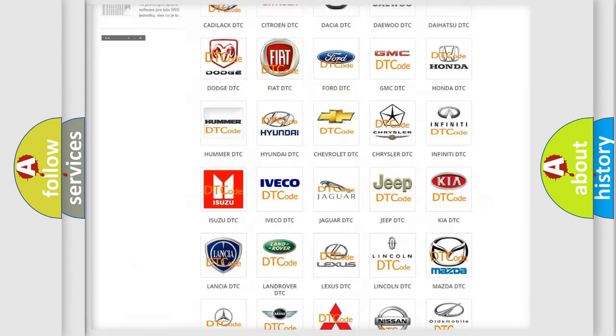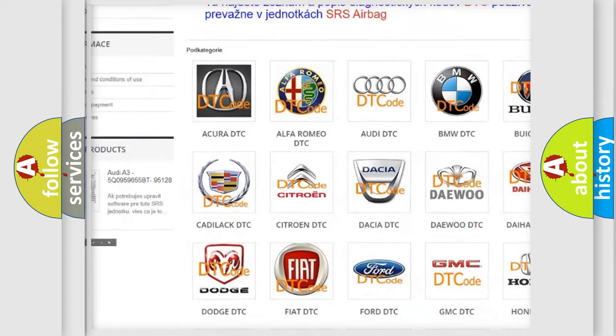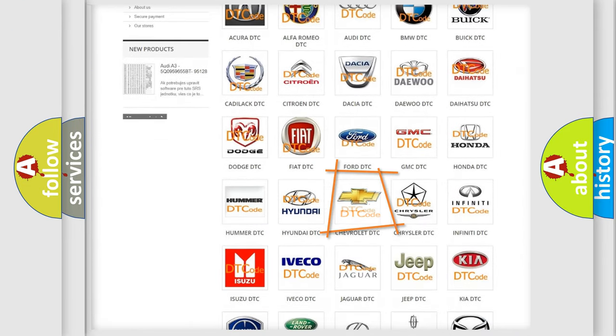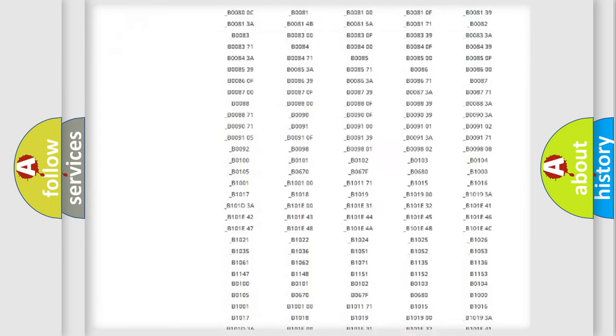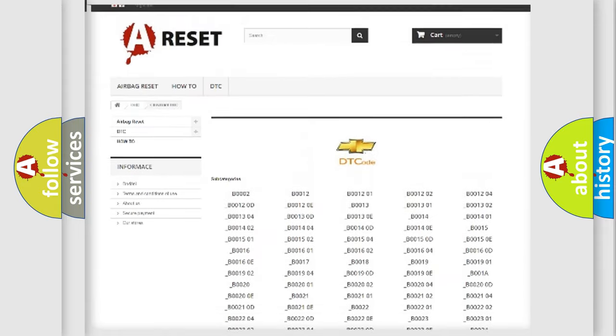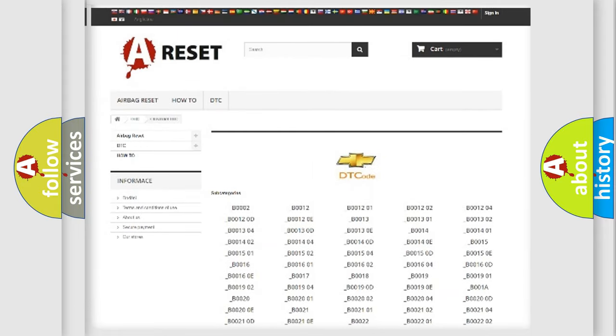Our website airbagreset.sk produces useful videos for you. You do not have to go through the OBD2 protocol anymore to know how to troubleshoot any car breakdown. You will find all the diagnostic codes that can be diagnosed in Chevrolet vehicles, and many other useful things.